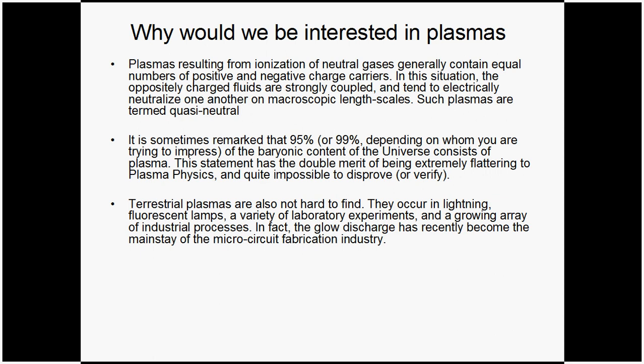Terrestrial plasmas are quite common, are recently common now. Natural plasmas would be things like a lightning, a lightning bolt is a pulse plasma. Fluorescent lamps, fluorescent tubes, lights, and some of the more recent energy efficient lights are plasmas.